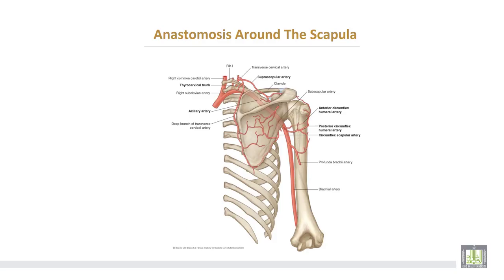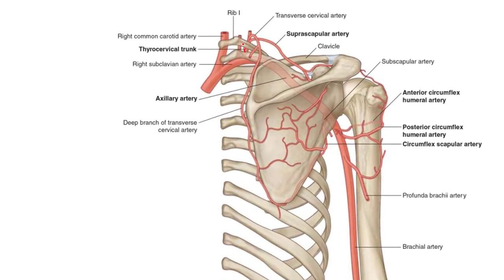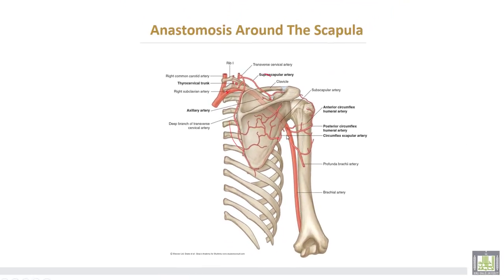The anastomosis around the scapula is formed by many branches. The suprascapular and transverse cervical arteries come from the thyrocervical trunk of the first part of the subclavian artery, while the subscapular artery comes from the axillary artery. So this anastomosis around the scapula is a connection between the first part of the subclavian artery and the third part of the axillary artery.